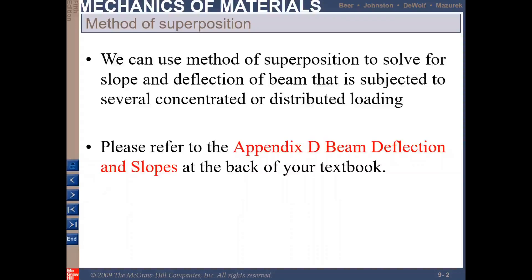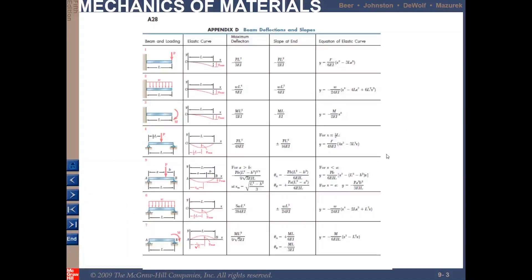To help you with this method, you can refer to Appendix D at the back of your textbook. If you look at Appendix D, you will have a table with five parts: the beam and loading, the elastic curve, the maximum deflection, the slope at the end, and the equation of the elastic curve. The table is divided into two parts — the first for cantilever beams and the second for simply supported beams.